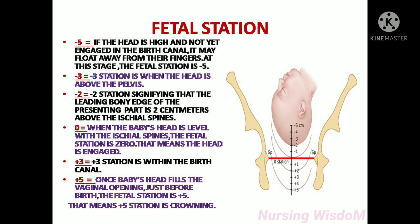At fetal station minus five, the head is high and not yet engaged in the birth canal — it may float away from the examiner's fingers. Minus three station is when the head is above the pelvis. Minus two station signifies that the leading bony edge of the presenting part is two centimeters above the ischial spines.